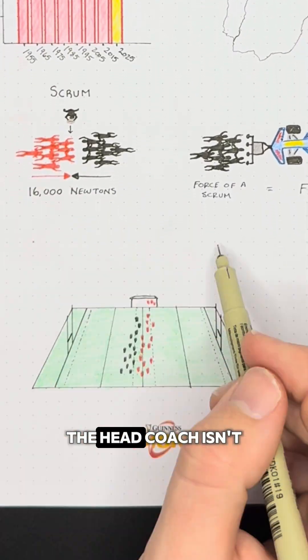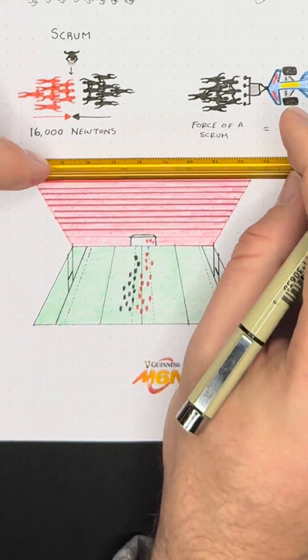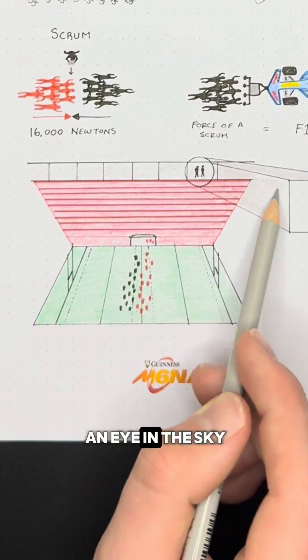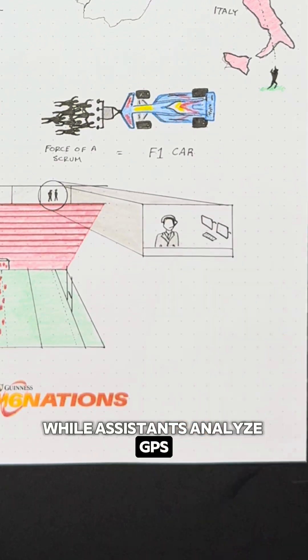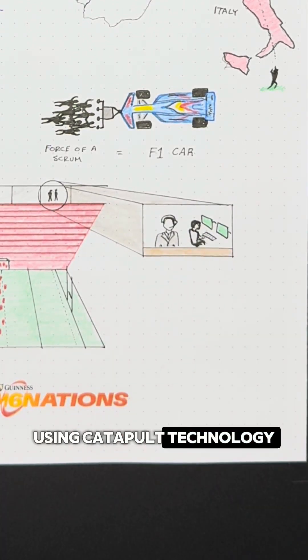You see, in the tournament, the head coach isn't even allowed on the sideline. Instead, they sit in the press box as an eye in the sky, communicating with the bench through a headset while assistants analyze GPS data and video in real time using catapult technology.